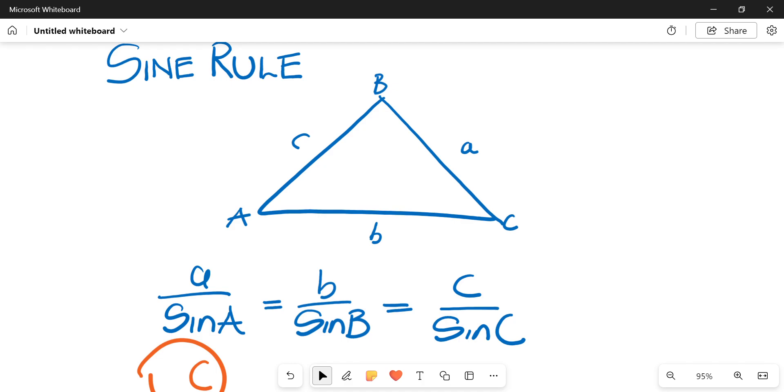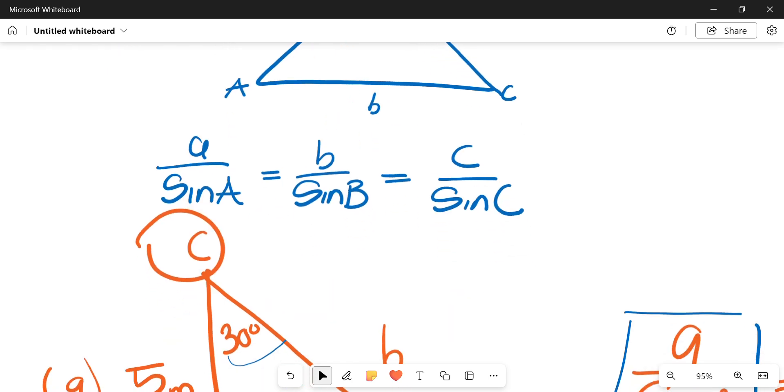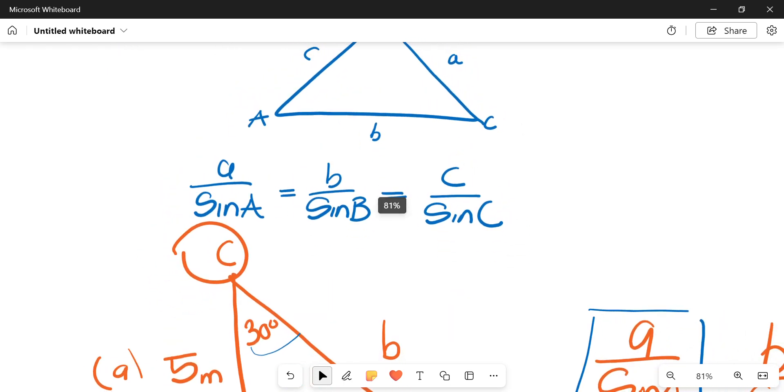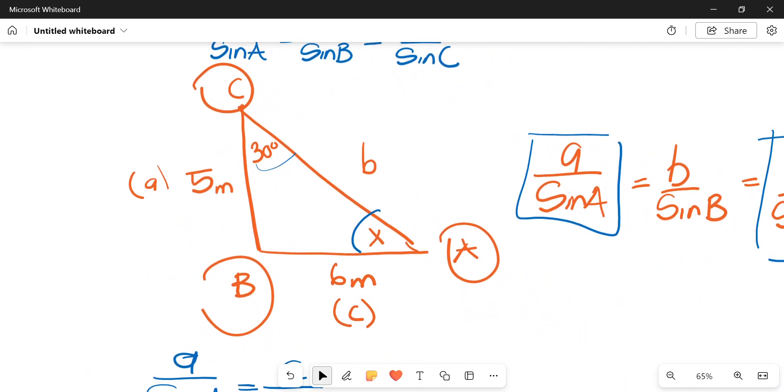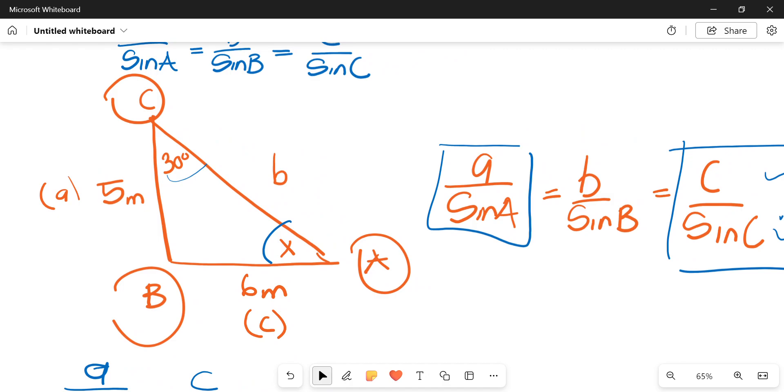There are two main methods that we're going to use to calculate the sine rule. Method number one, we are calculating an unknown angle. Method number two, we'll be calculating an unknown length. So let's get into method one. I've already done this because I thought it's a recording, but yeah, it turns out technology did a number on me.